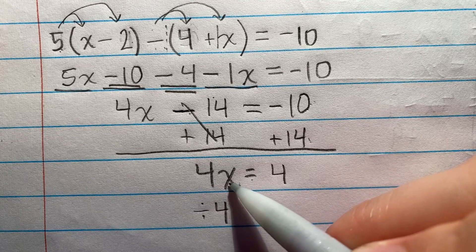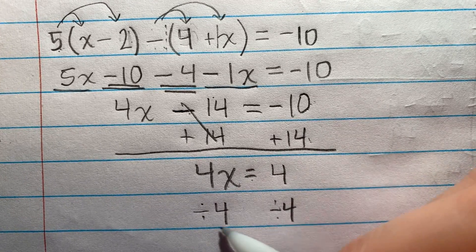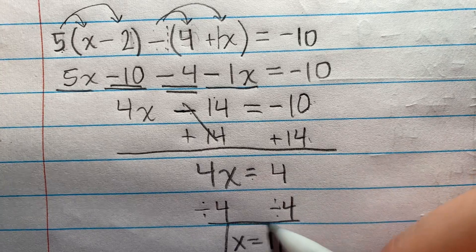And now I have x as being multiplied by 4, so I'm going to divide by 4. And I end up with x equals 1.